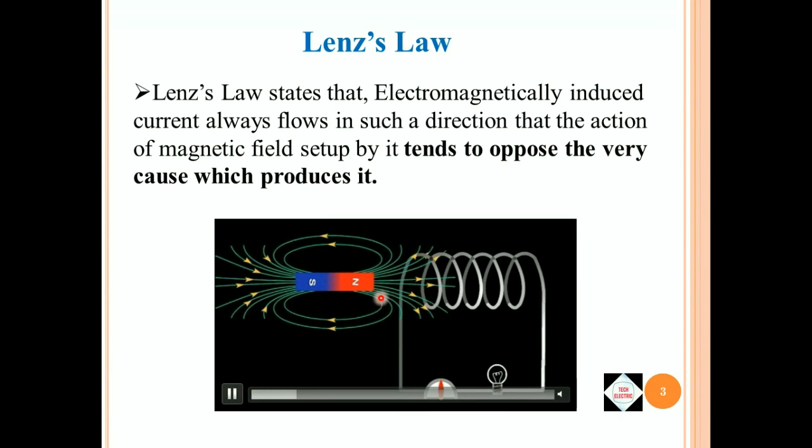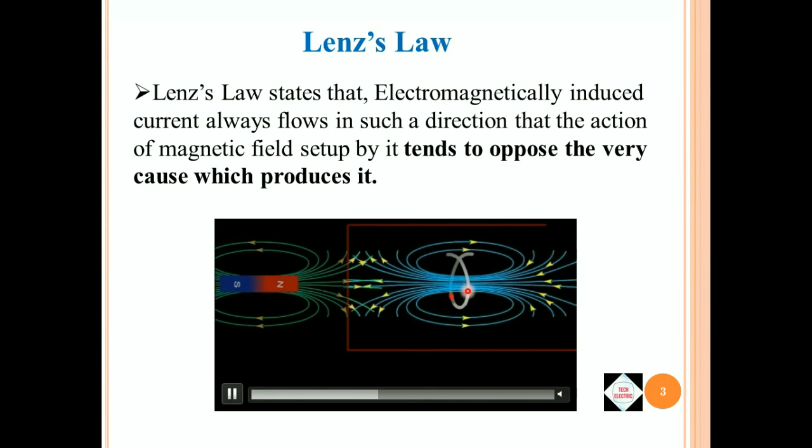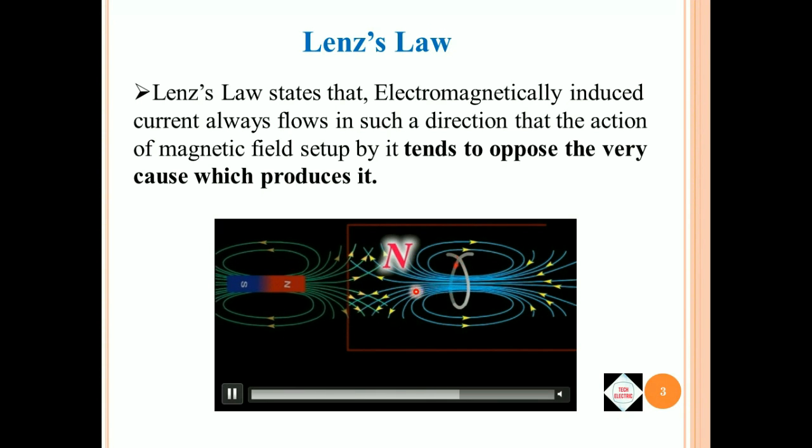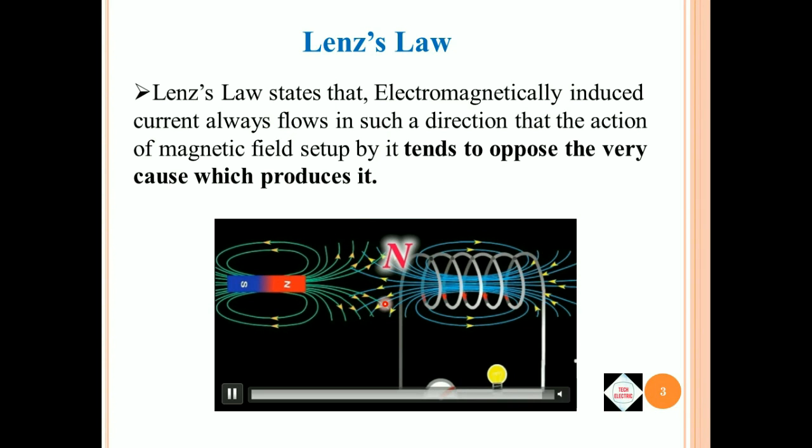As you can see, the changing magnetic field induces an EMF which allows a current flow through the coil. The current itself produces a magnetic field which is opposing the very cause which produced it. This itself explains the Lenz Law.